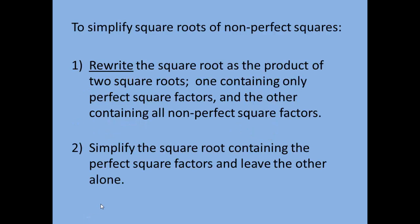Now let's piece this all together. To simplify square roots of non-perfect squares: the first thing you do is rewrite the square root as a product of two square roots — one for your perfect squares and one for your non-perfect squares. Once you've done that, the next step is to simplify the square root that contains perfect square factors, and leave the non-perfect square root alone.